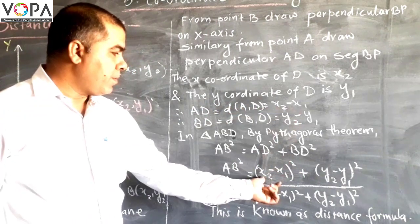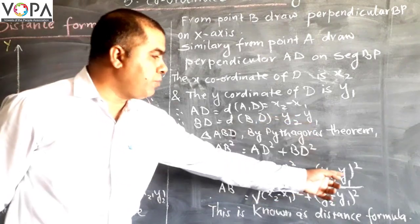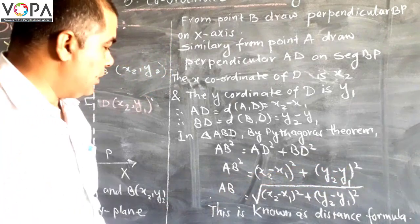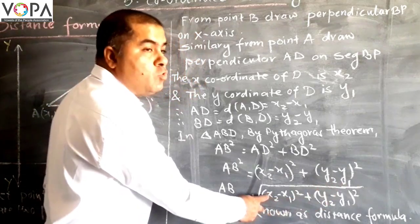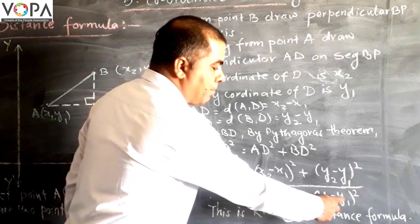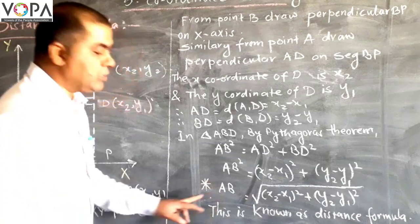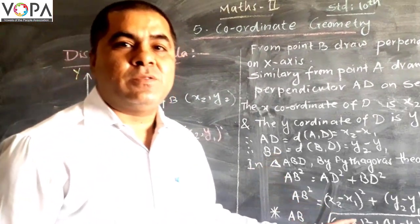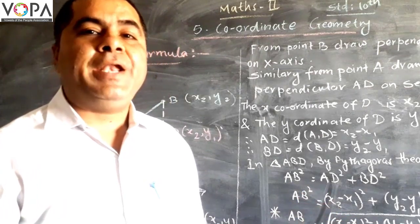Now taking square root, therefore AB will be square root of (x2 minus x1) squared plus (y2 minus y1) squared. This is called the distance formula. By using this now we will find the distance between any two points in the XY plane.